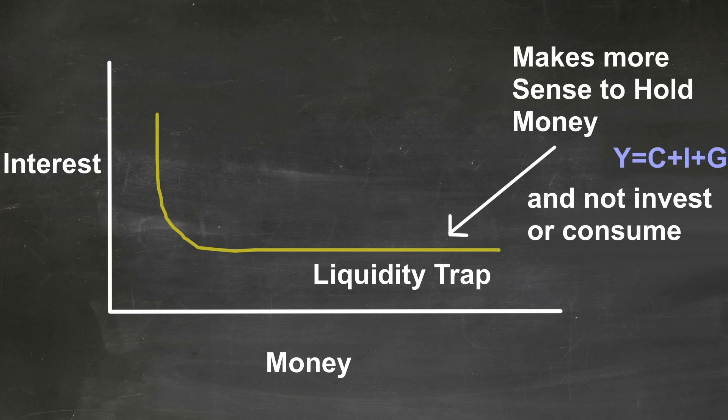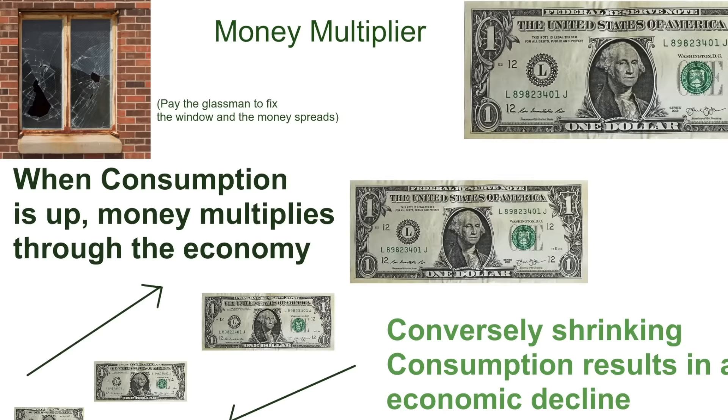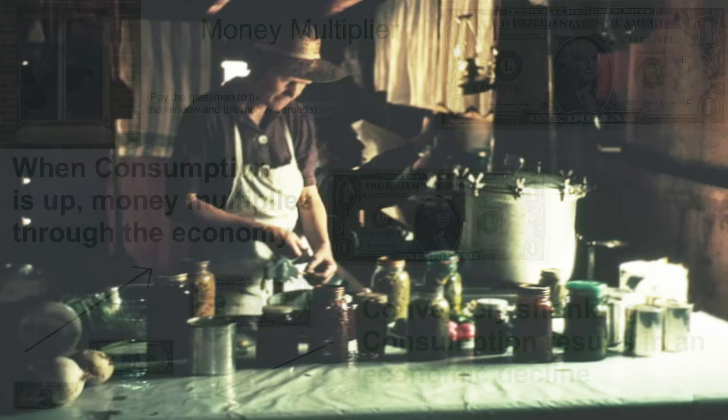A liquidity trap being when people prefer to hold cash over bonds, when interest rates have fallen too low to make the investment worth their while. Spending, or lack of spending, had a multiplier effect throughout the economy. When demand fell, firms had to cut costs — labor being a variable cost — they had to choose to cut wages or lay people off.